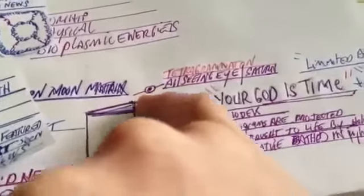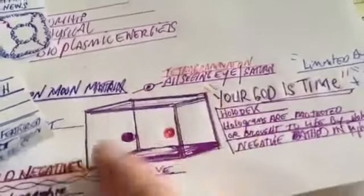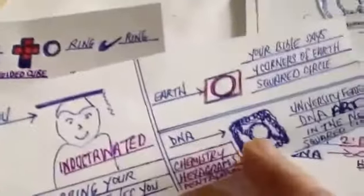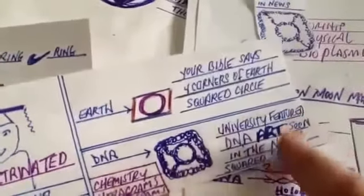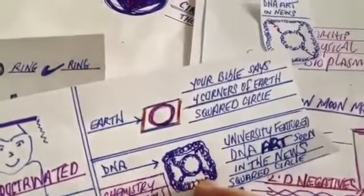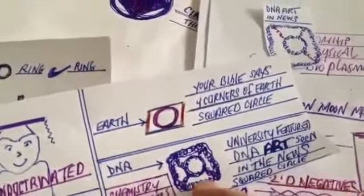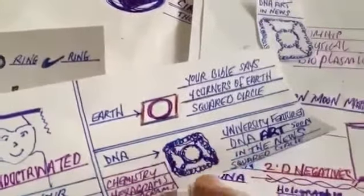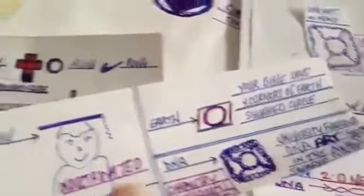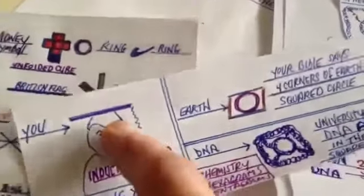They show an all-seeing eye up there and then the ground is a checkerboard. You've been squared. They tell you that the Earth has four corners. I just saw this on Yahoo Mail — they were featuring some university art and they showed the DNA that looked just like this: a circle inside of a square. So when you graduate, it's called squaring your circle.